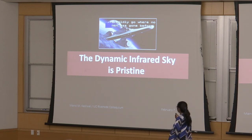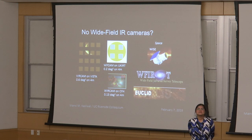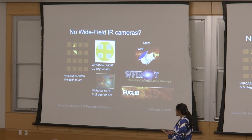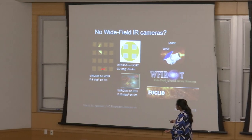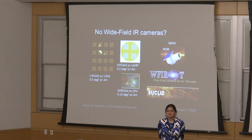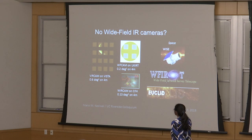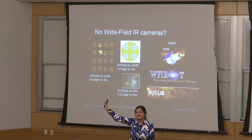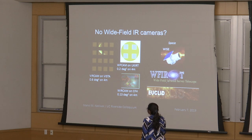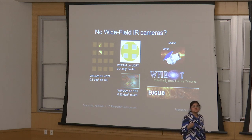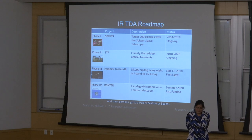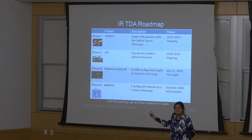Nobody has infrared cameras — and I mean that quite literally. It's not just that I don't have a wide-field infrared camera; we as an astronomical community have suffered because the widest-field infrared camera is less than one square degree — actually 0.6 square degrees — and it's an extremely expensive instrument on the European VISTA telescope. The full moon on the sky is half a degree. We really need something much bigger than that to image huge patches of sky at a rapid enough rate to find infrared transients. I present a roadmap with four facilities.